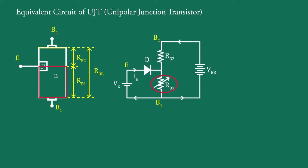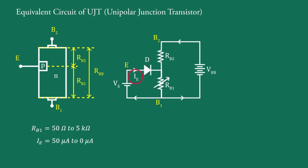Its magnitude varies with the emitter current IE from 50 ohms to 5 kilo-ohms for a corresponding change of IE from 50 microamperes to 0 microamperes. Resistor RB2 is the resistance of the bar between base B2 and the emitter junction — that is, of this part.